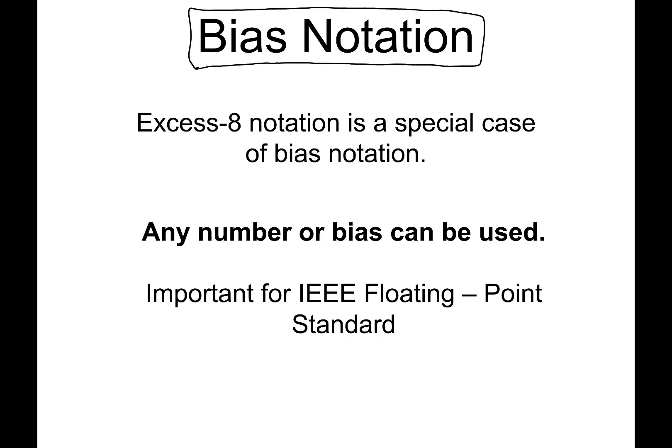The point of this is that excess-8 is just a special case of bias notation, and we can use any number or bias when we write our numbers using this notation. This is important for the IEEE floating point standard. Bias notation is also used when we write floating point numbers, which we're going to look at next.